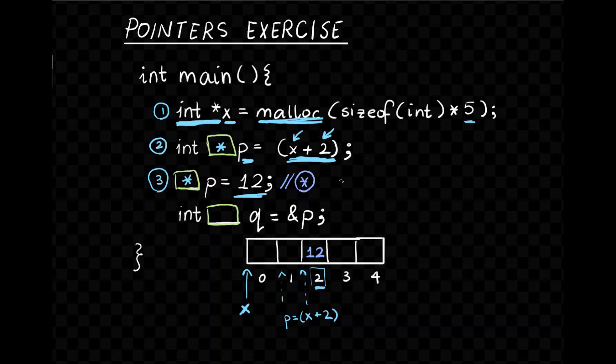So this is equivalent to if I did star or dereference x plus 2 equals to 12 or alternatively I could do x square bracket 2 equals to 12.